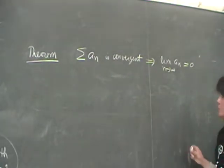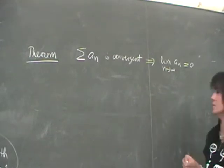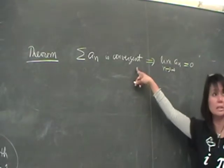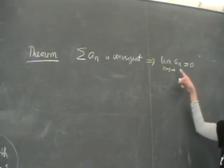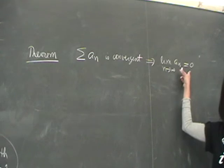Now, there is this theorem that we will use to decide convergence or divergence of a given series. So if I have a series A sub N, if we know that the series is convergent, according to the theorem, then we can conclude that the limit of the nth term has to be zero.